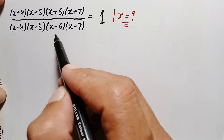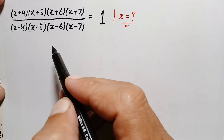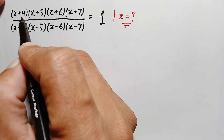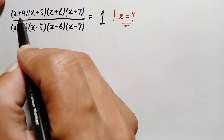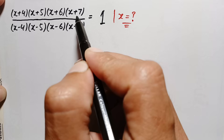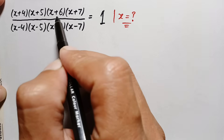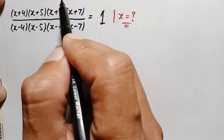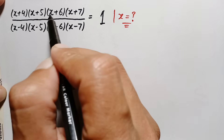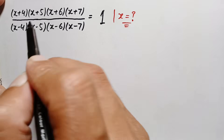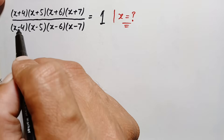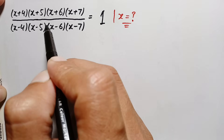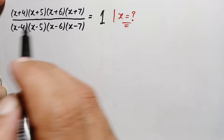How can we solve this interesting algebra math problem? Looking at the numerator, the sum of 4 plus 7 is 11, and 5 plus 6 is also 11. So we will combine these two expressions and these two expressions. In the same way, in the denominator, we will combine these two expressions and these two expressions.